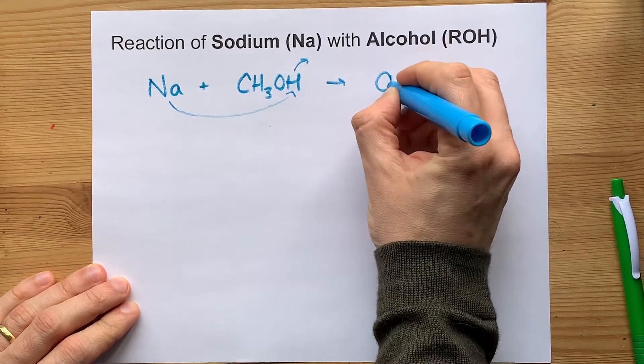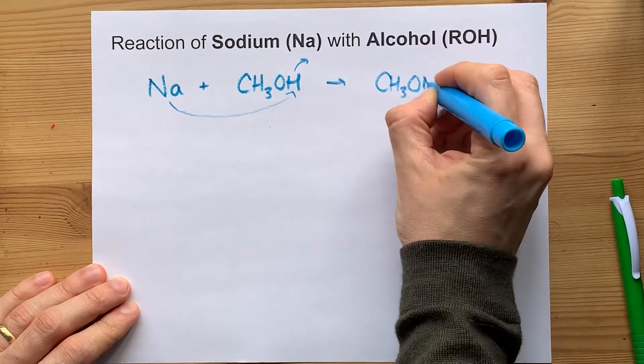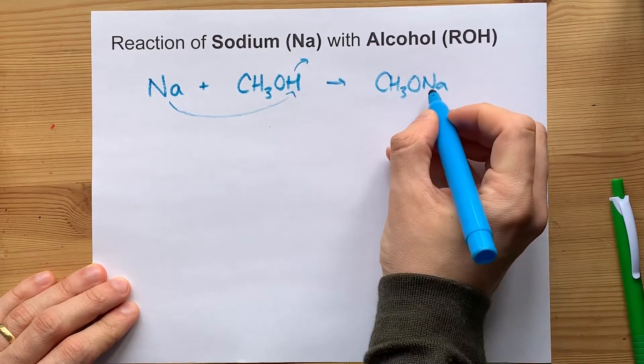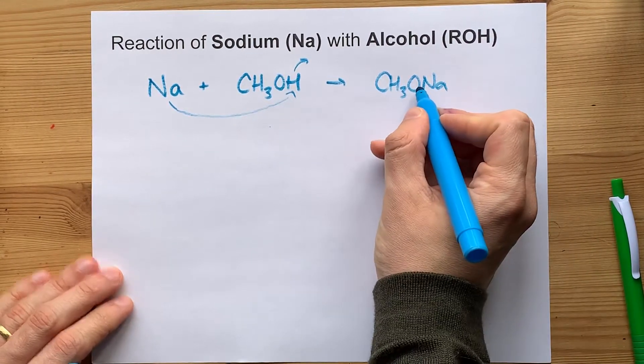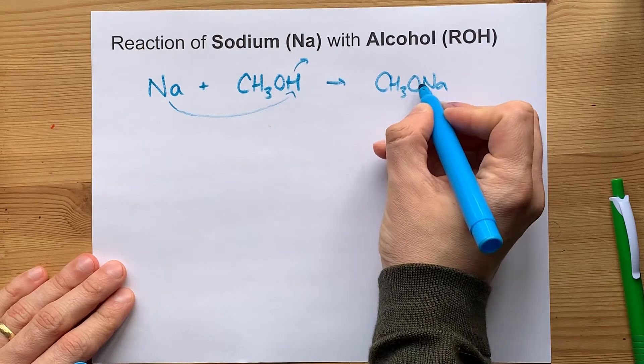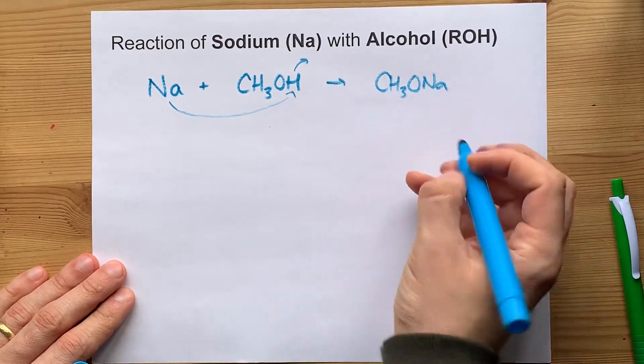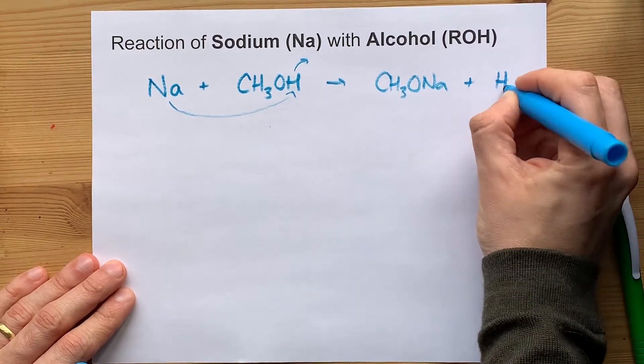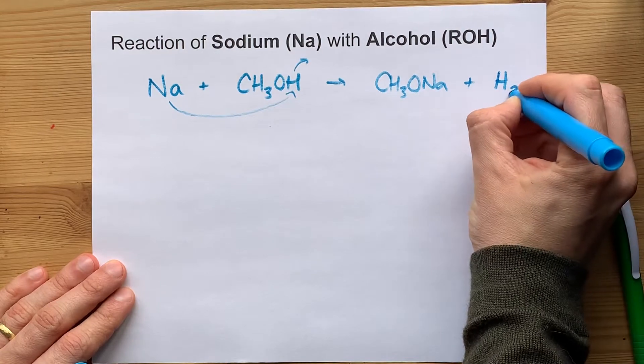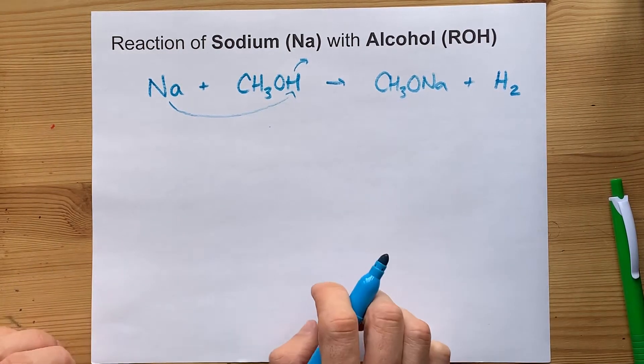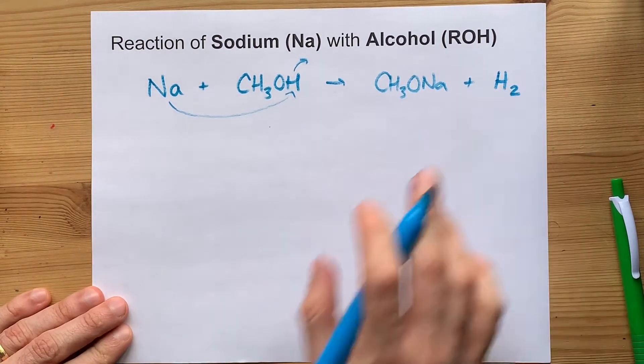You end up with CH3ONa, which in this case is called sodium methoxide, but the methoxide is only because it's CH3O. And then the hydrogens that were kicked off need to form the diatomic molecule H2 and are given off as a gas.